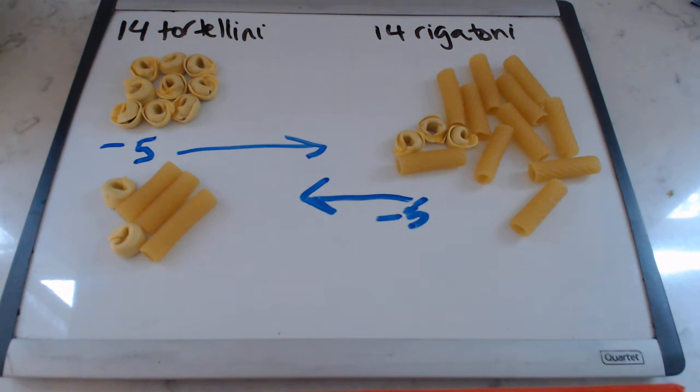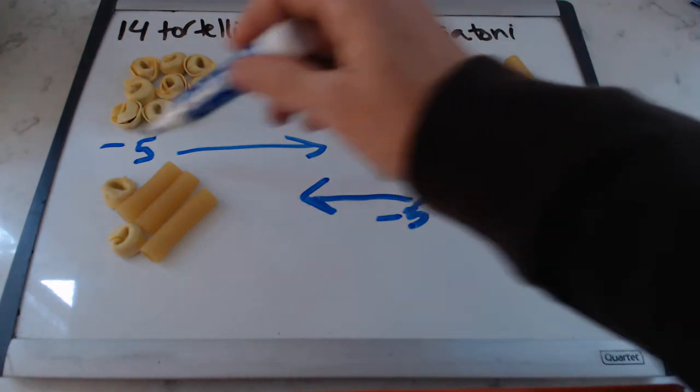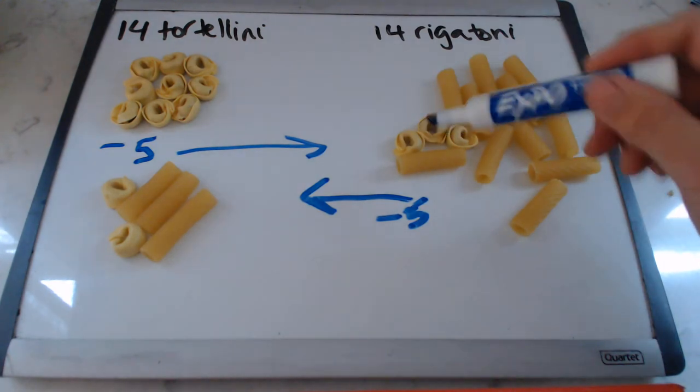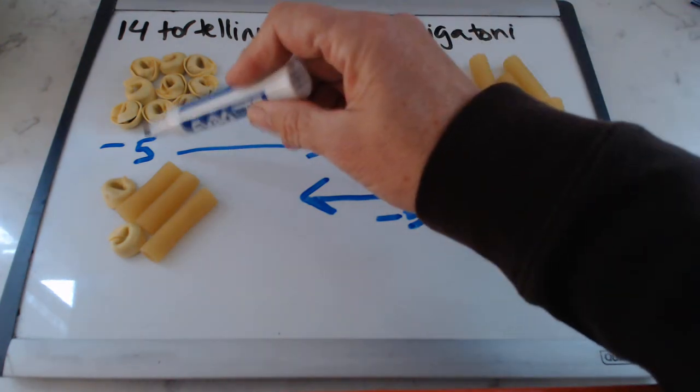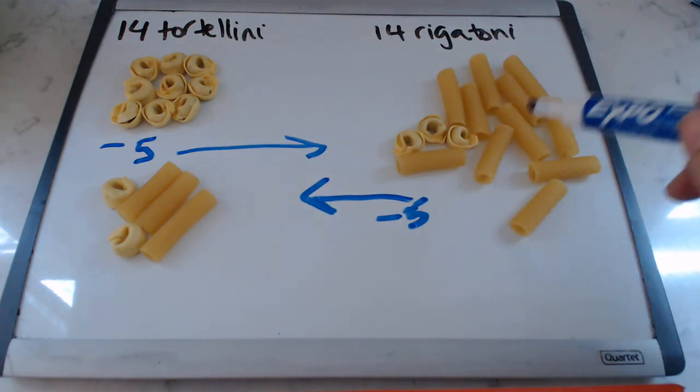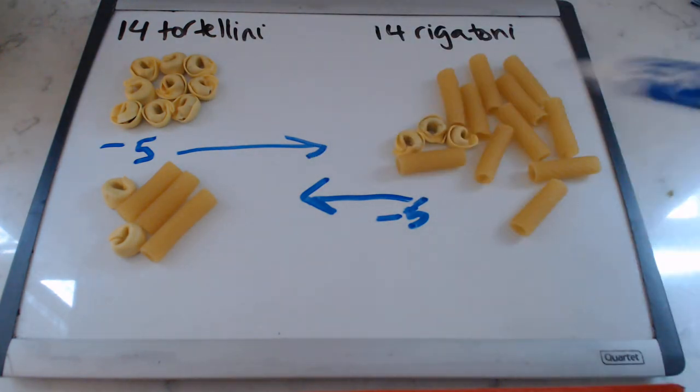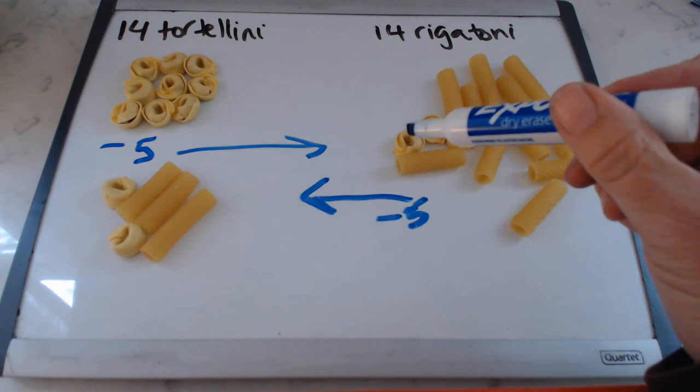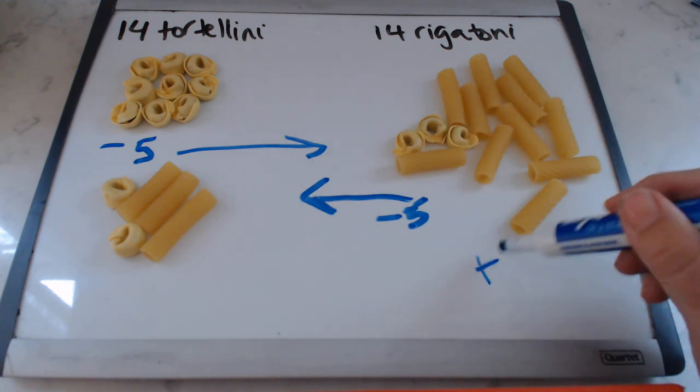It will always be that. And the reason for that is you have to mentally reverse. You have to have reversibility. And that's the hard thing in conservation. When you sent five tortellinis over, but two of them came back, you needed to mentally reverse the number of tortellinis you sent over. And it's like, okay, I put five over there, but two of them came back. So I know that there's only three over here.